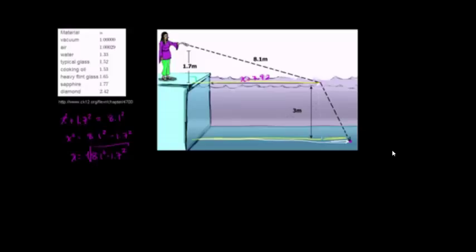Now we just have to figure out this incremental distance underwater, add that to x, and we know the entire distance. Let's think about what the incident angle and the angle of refraction are. I've dropped a perpendicular to the surface, so our incident angle is this angle right over here.